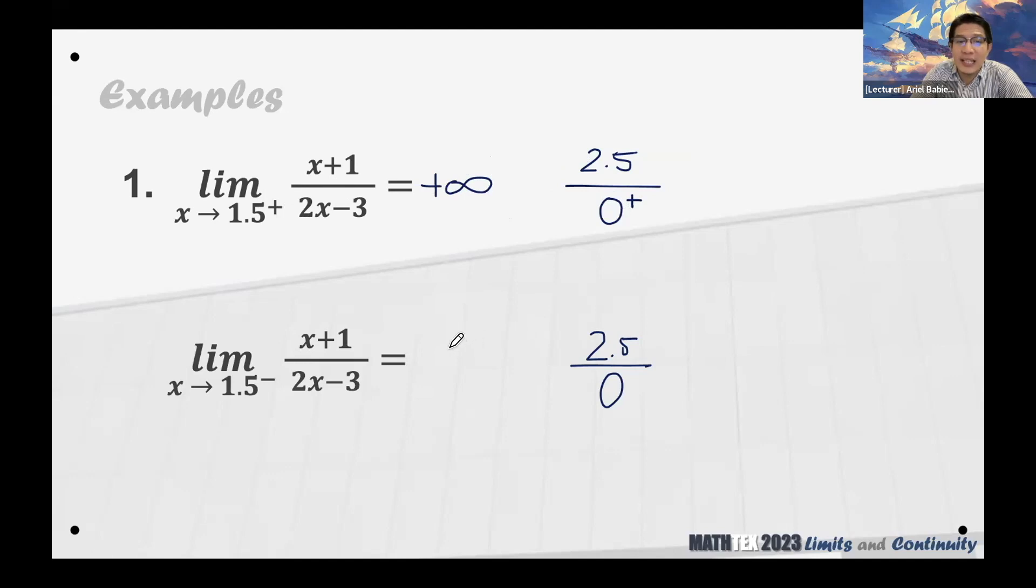I hope you were able to follow that. It's not really that difficult. Non-zero over zero, that is an indicator that it is already infinity. However, the question is, is it positive or is it negative infinity? Let's do the second one.